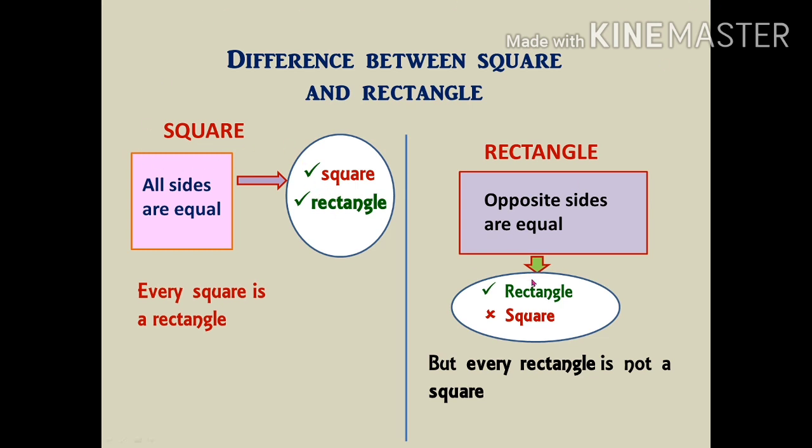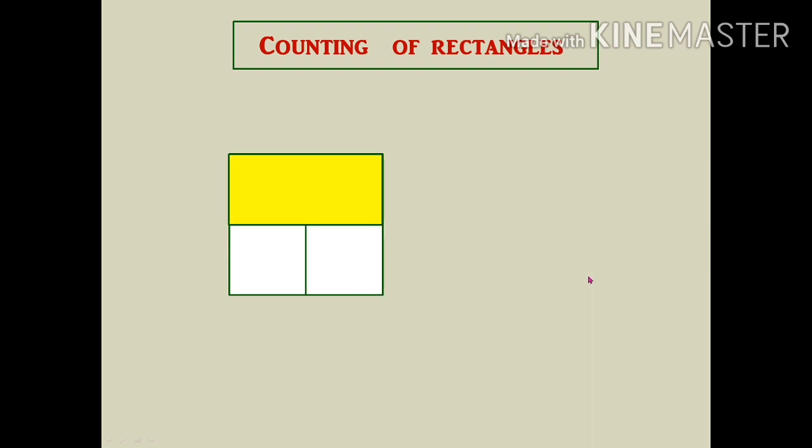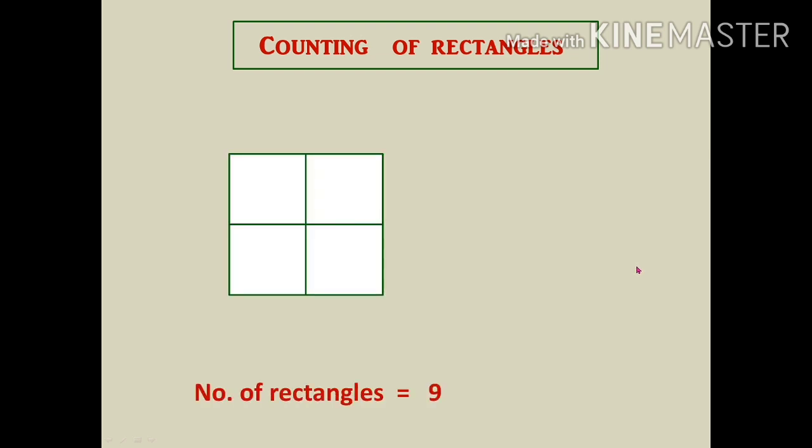Now let's solve the counting of rectangles problem. Here is the same image we used for squares. Since squares are also included in rectangles, we count all of them. Counting gives 1, 2, 3, 4, 5, 6, 7, 8, and 9. The total number of rectangles is 9. This is the normal method.